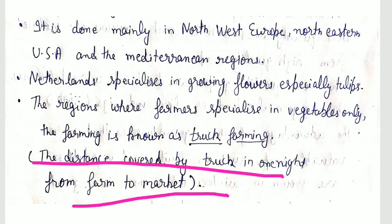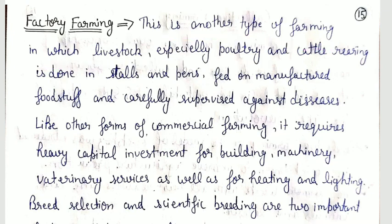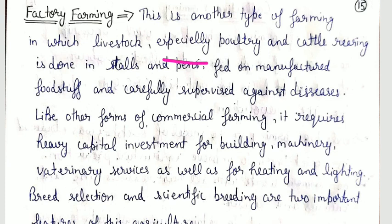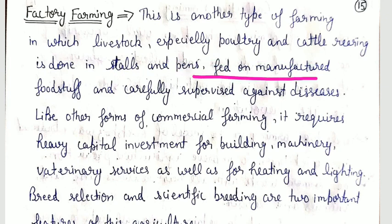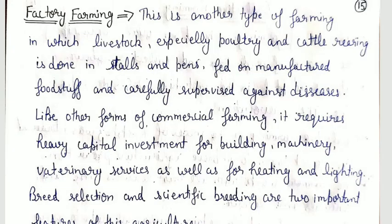Next is factory farming. This is another type of farming in which livestock, especially poultry and cattle, are reared in stalls and pens, fed on manufactured food stuff, and carefully supervised against disease.